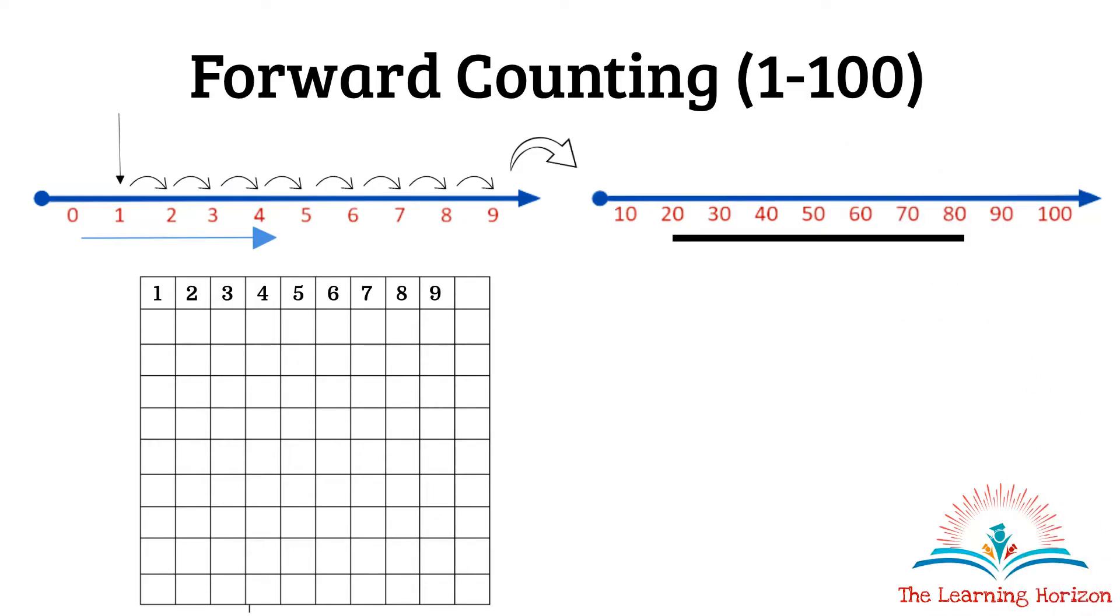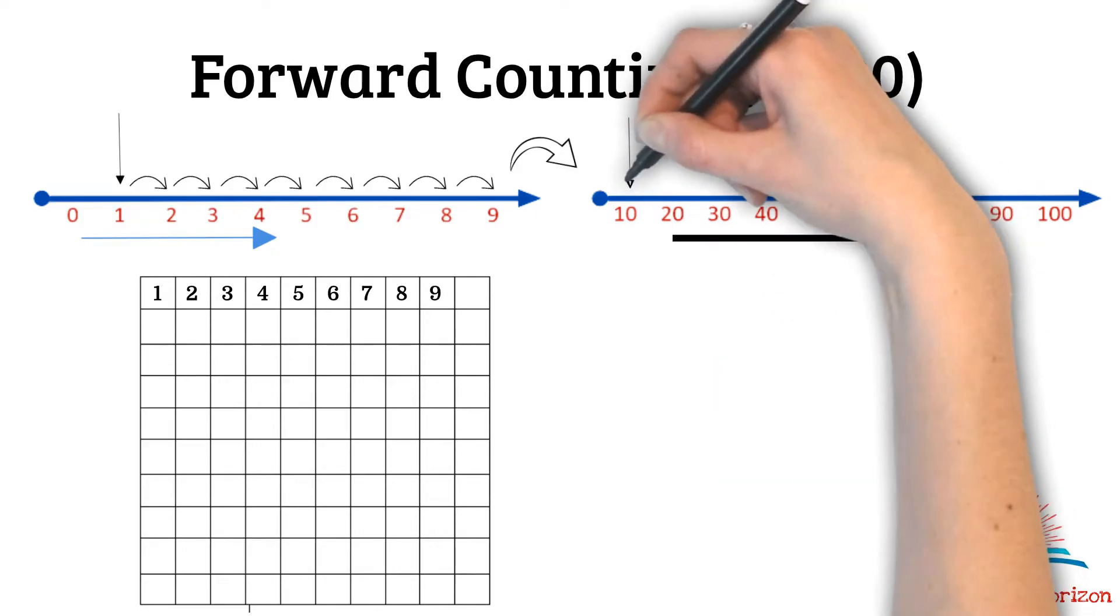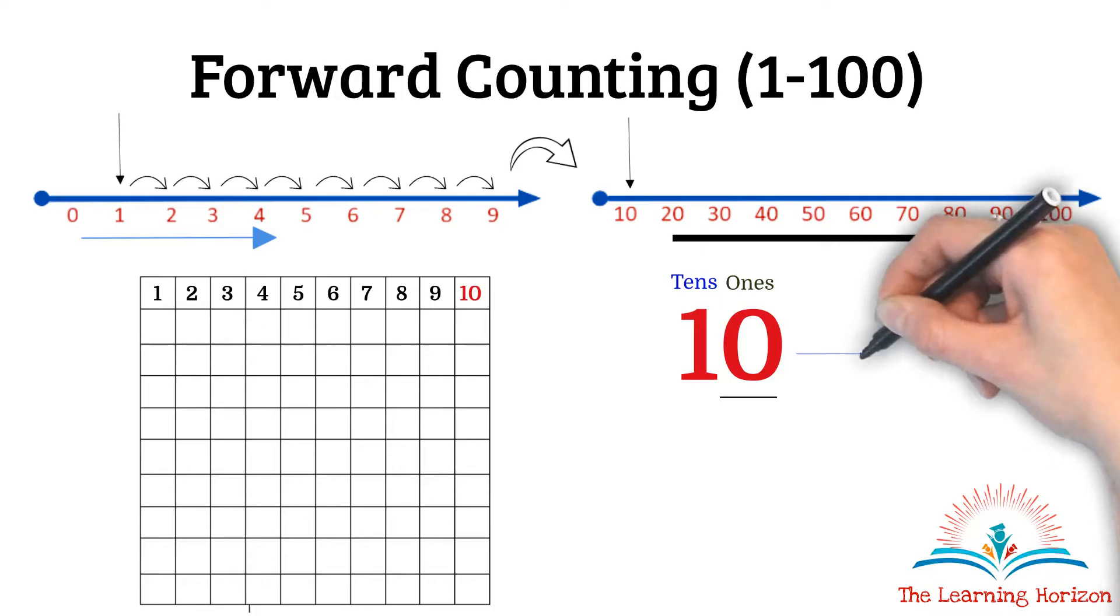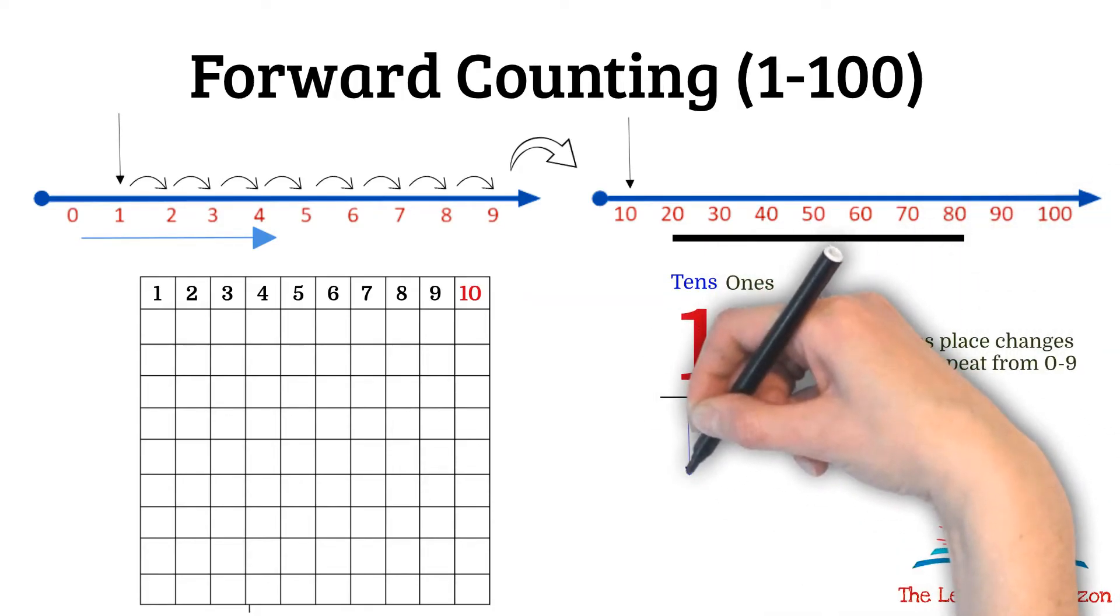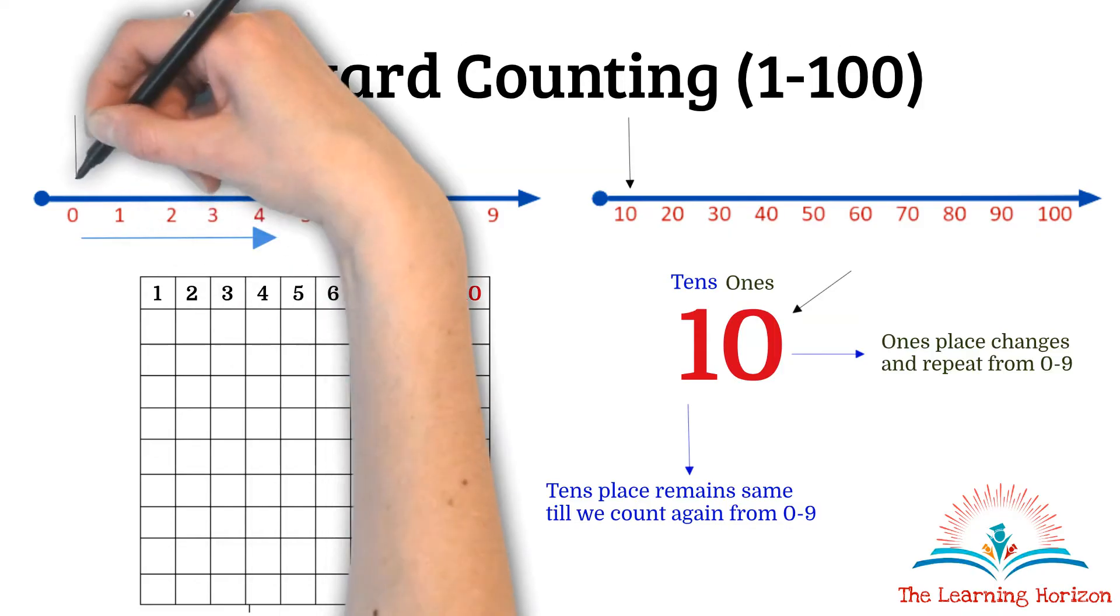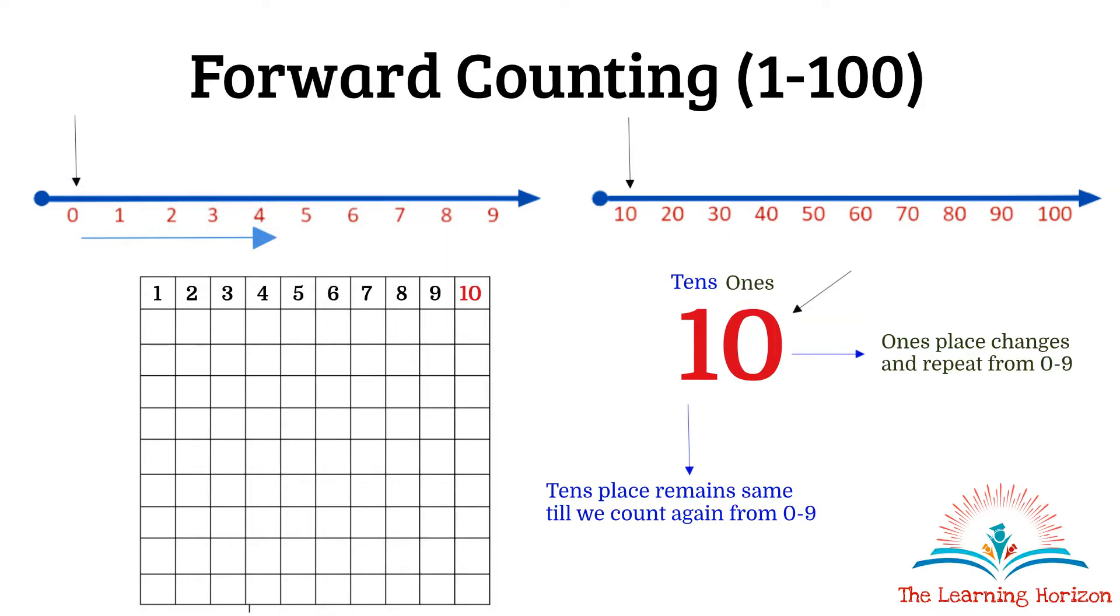So we will be considering our second number line that is the number line for tens. We know when we count on from 9 the number that is after 9 is 10. So we will mark that number 10 on this number line and we will write 10 in our hundreds chart. So now we have 10. The number 10 has two places, tens and ones. Whenever we forward count we know that the number increases by 1. So ones place is the place that changes and tens place remains same. What do we have at ones place? It's 0. Let us mark that on the number line here. Let's count again.